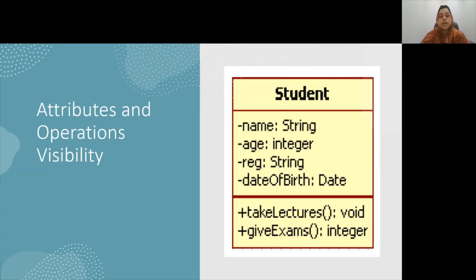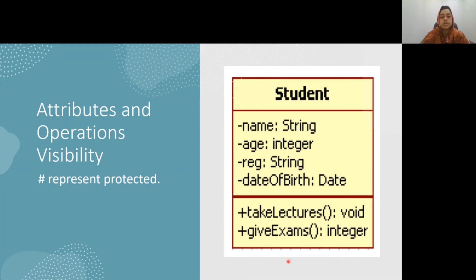Attributes and operations can be assigned a level of visibility on the class diagram. A visibility indicator is shown as minus or plus in the figure. The visibility of a feature can be defined by either a keyword or a symbol. There are three specific types of visibility: private, public, and protected. There is no default visibility value, so we have to explicitly mention the visibility of each attribute and operation. Private visibility means that a feature is available only within the class that owns it. Here, name, age, registration, and date of birth are only accessible within the student class.